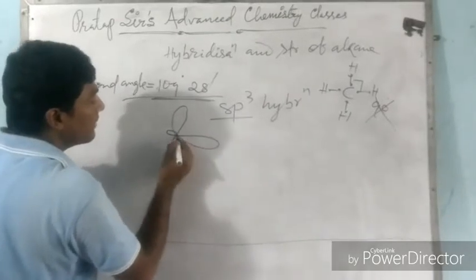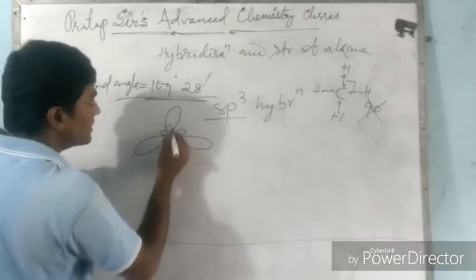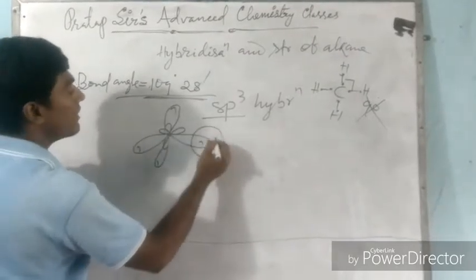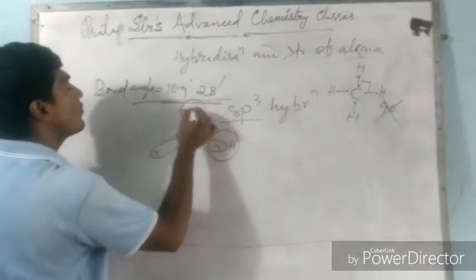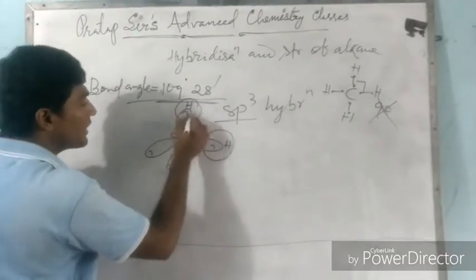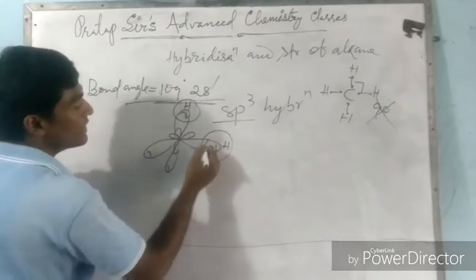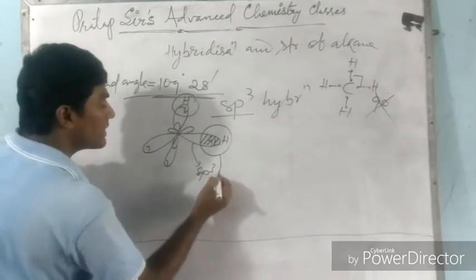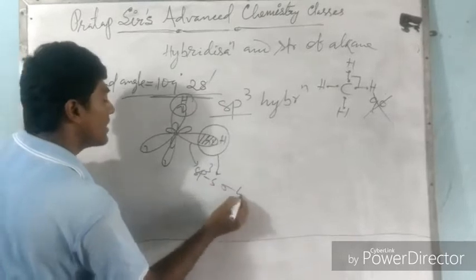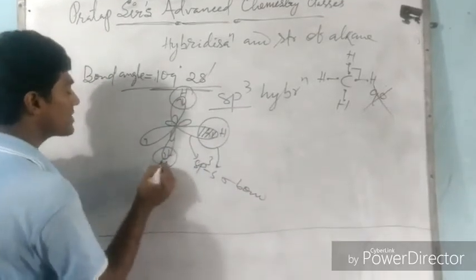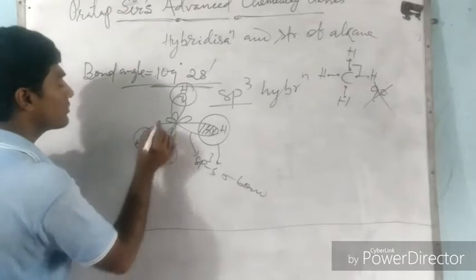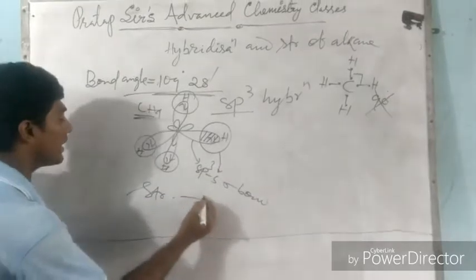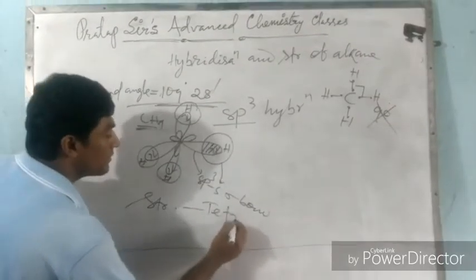There is the 1st hybrid orbital, 2nd, 3rd, and 4th — all having one electron each. The s orbital of hydrogen comes from 4 directions, each contributing one electron, and this overlap is the bond. This is sp3 hybrid orbital overlapping with s orbital — an sp3-s sigma bond — forming CH4.